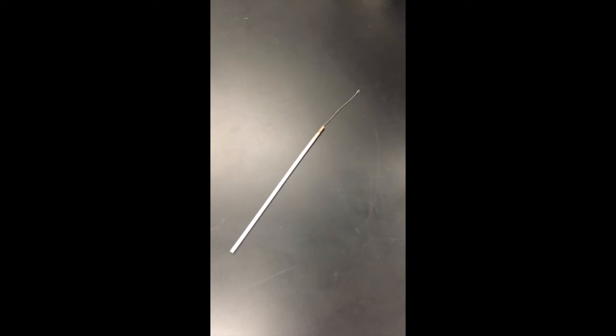Most often, bacteria can be moved from one place to another using an instrument known as a loop. Traditionally, a loop is made of metal with a wire handle and a thin wire ending in a circle.